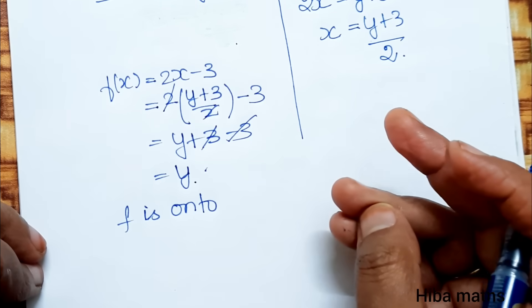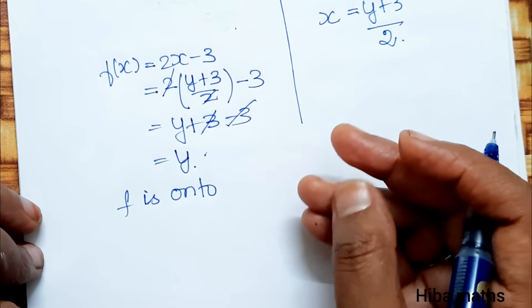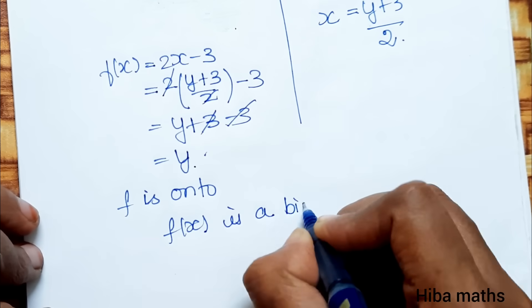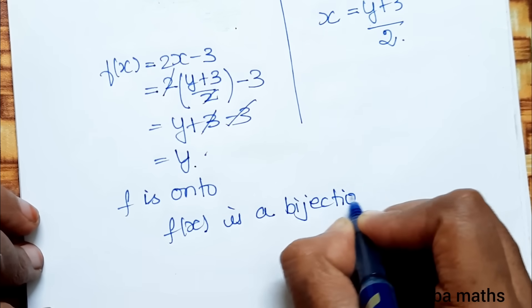So one-to-one and onto are both satisfied. Therefore, f is a bijection.